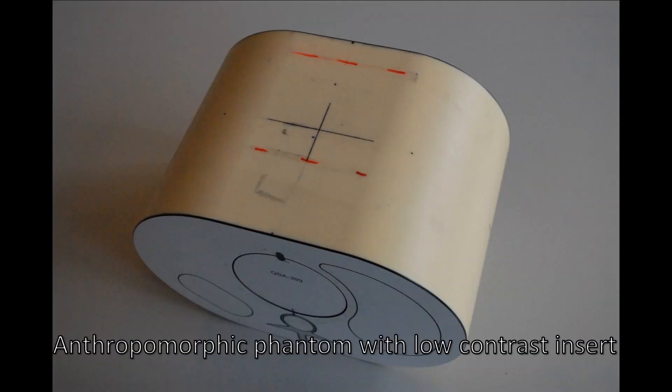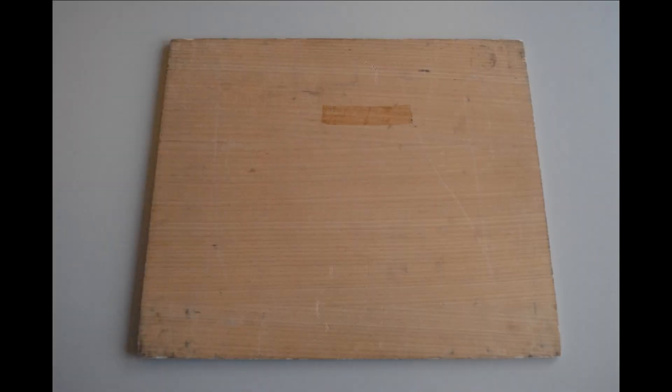Finally, we will describe the manipulation of the QRM series phantoms. You will need an anthropomorphic phantom with low contrast insert and a wooden plank of low density.